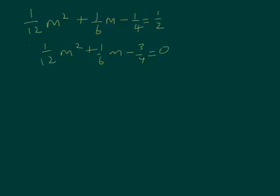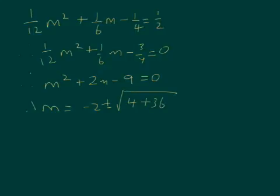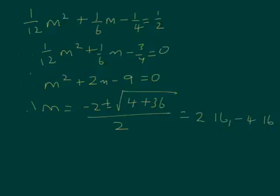Multiplying everything through by 12 to clear the fractions. This doesn't factorise, so we use the quadratic formula: m equals minus b plus or minus the square root of b squared minus 4ac, all over 2a. Solving gives m equals 2.16 or minus 4.16. Clearly m is not negative, so the median is 2.16 to 3 significant figures.